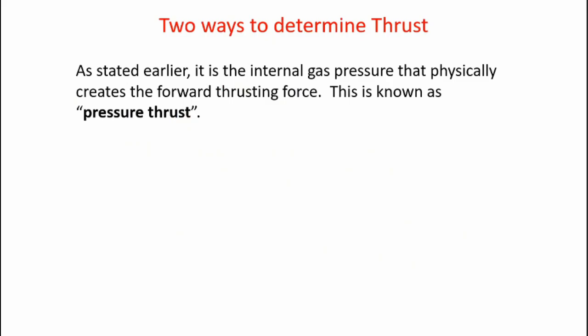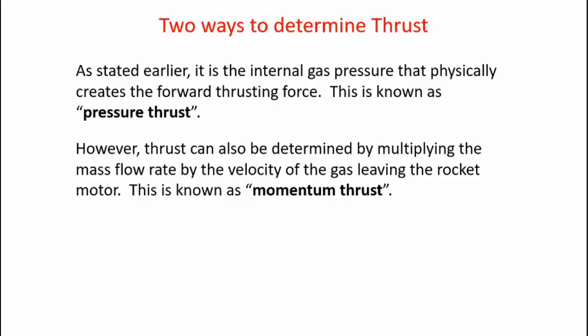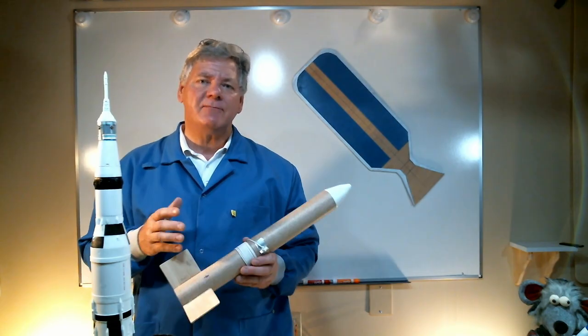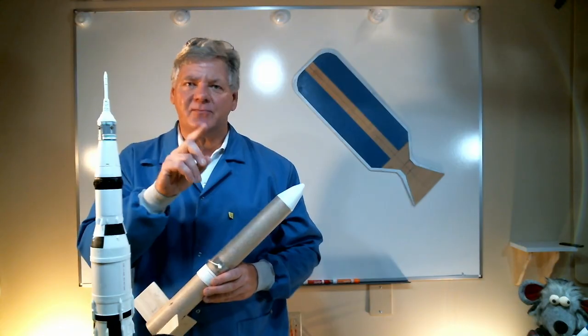Now there are two ways to determine thrust. As stated earlier, it's the internal gas pressure that physically creates the forward thrusting force. This is known as pressure thrust. However, thrust can also be determined by multiplying the mass flow rate, the amount of mass flowing per second out of the motor, by the velocity of the gas, and we get momentum thrust. Now the pressure thrust and momentum thrust are both the same thing—the forward force acting on the rocket motor. They're just two different ways to determine the thrust.